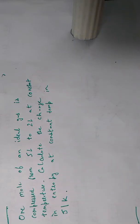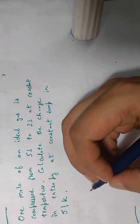This is a direct formula-based question that came in GATE 2016 paper. It says that one mole of an ideal gas is compressed from 5 liters to 2 liters at constant temperature. We need to calculate the change in entropy in joules per Kelvin.